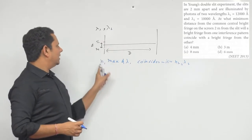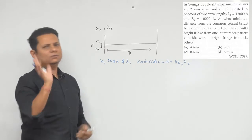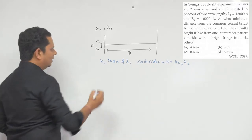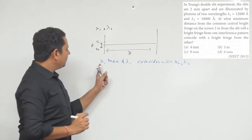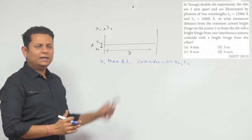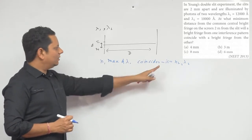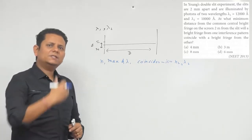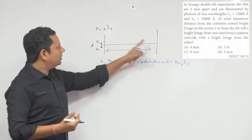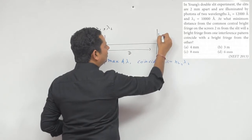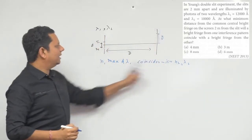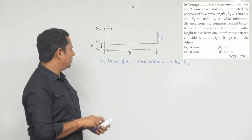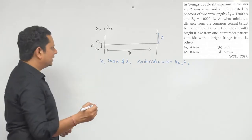We can say n1 is equal to 5 and the maxima coincide. We can use the direct formula. There are two types of questions we can look at — we ask where n1 maxima and n2 maxima coincide, and we use the direct formula.